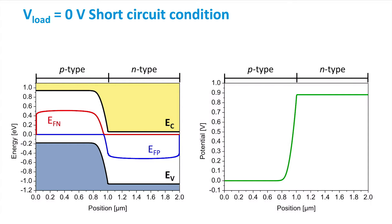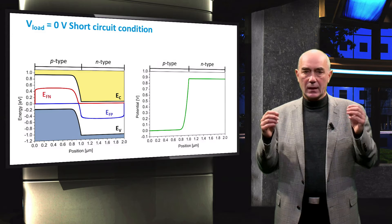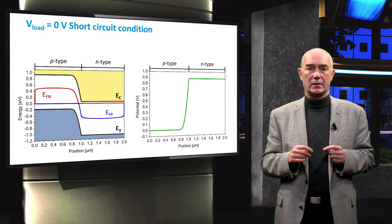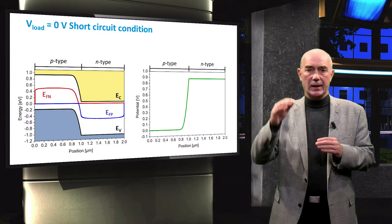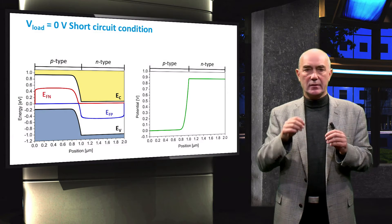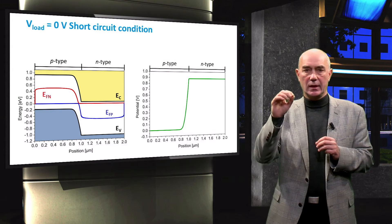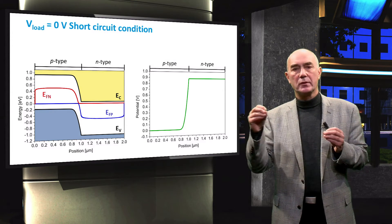Here we see the band diagram of an illuminated PN junction diode at short circuit condition. The resistance of the external circuit between the electrodes is zero so that there is no voltage drop at the load. From the band diagram and the graph of the electrostatic potential, we can see that the valence and conduction band edges and the built-in electrostatic potential have not changed with respect to thermal equilibrium. The significant change is in the profile of quasi Fermi levels. The energy position of the quasi Fermi level of electrons in the P-type region is much higher than in the N-type region. This gradient in the quasi Fermi level determines the amount and direction of current flowing through the diode and external circuit.